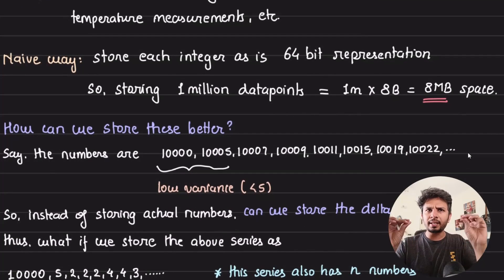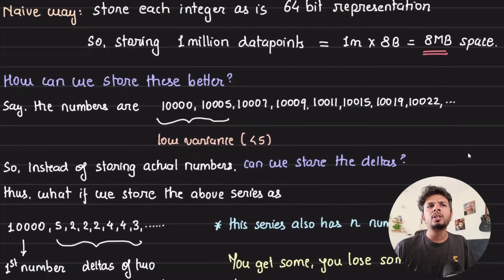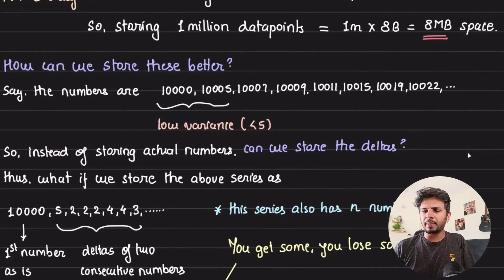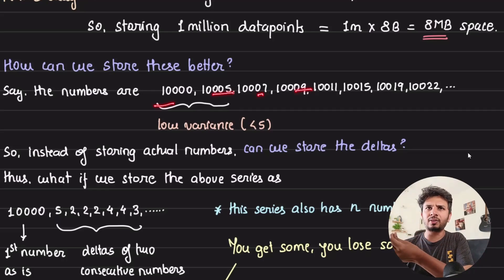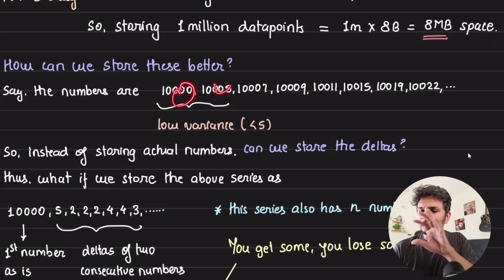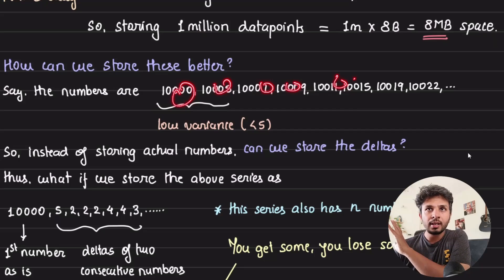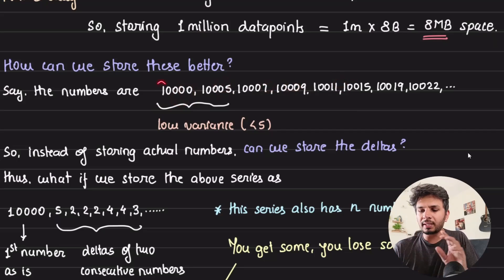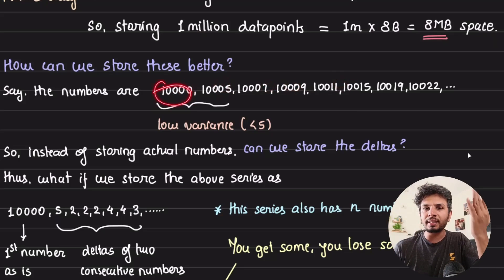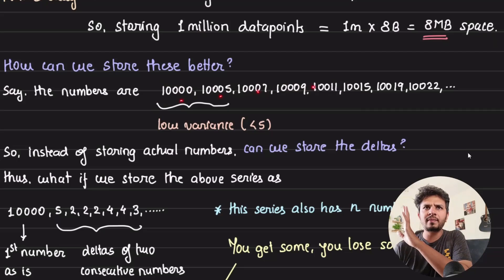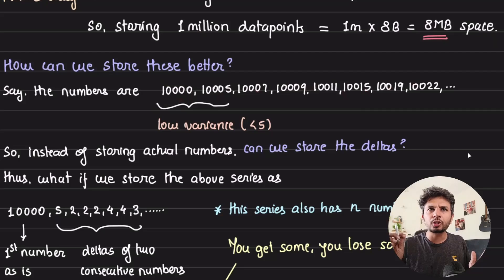Let's take a concrete example. Say we have the numbers 10000, 10005, 10007, 10009, 10011. The numbers are slightly larger, but the variance is low — from 10000 the values move to 10005, 10007, 10009, 10011, 10015, 10019, 10022 and so on. So we have low variance but large numbers.